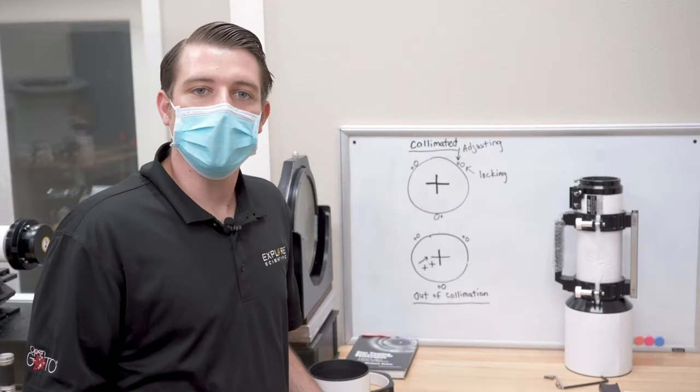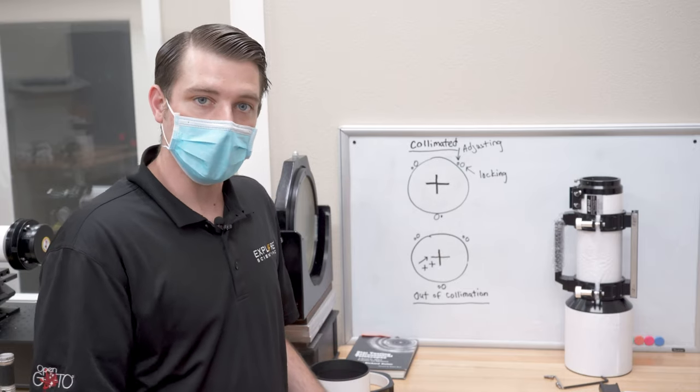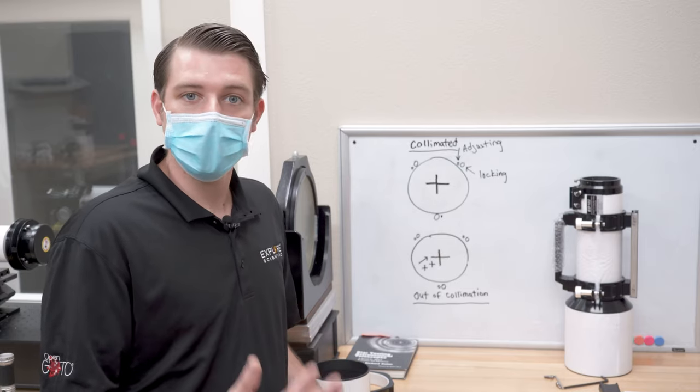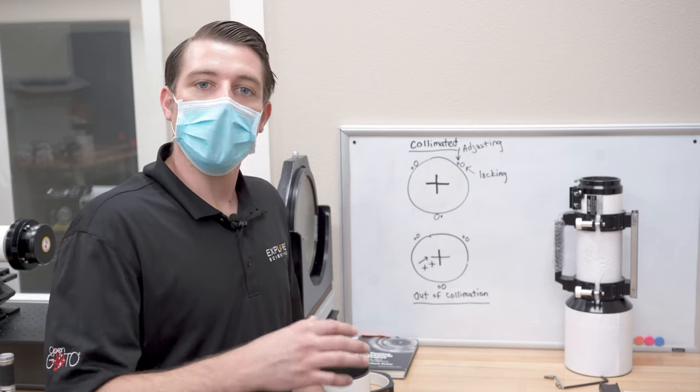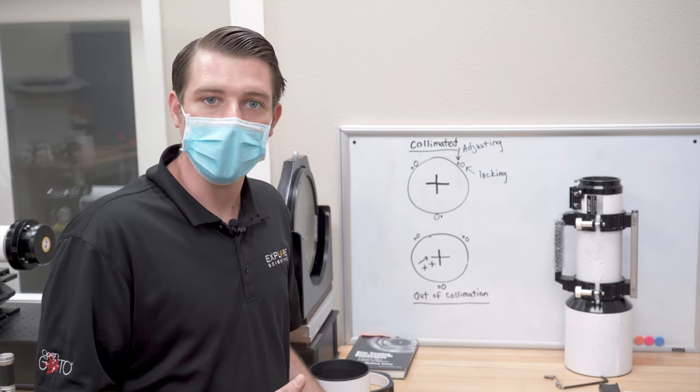So collimation is the alignment of the lens cell on the end of your telescope. The lens cell is what's holding those optics in, so you want to make sure those are aligned and centered to give you the best performance out of your telescope.